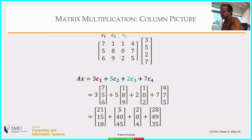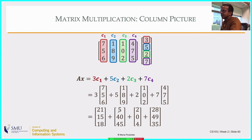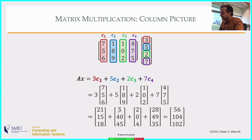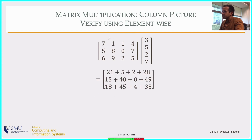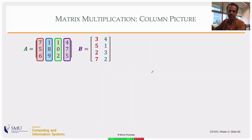In the column picture: Ax = 3*c1 + 5*c2 + 2*c3 + 7*c4, which means 3 times the first column vector [7,5,6], plus 5 times [1,8,9], and so on. Scaling the first column by 3 gives [21,15,18], then add them up. You can verify this by doing a straightforward element-by-element multiplication: 7*3 + 1*5 + 1*2 + 4*7 = 21+5+2+28, which turns out to be the same result.